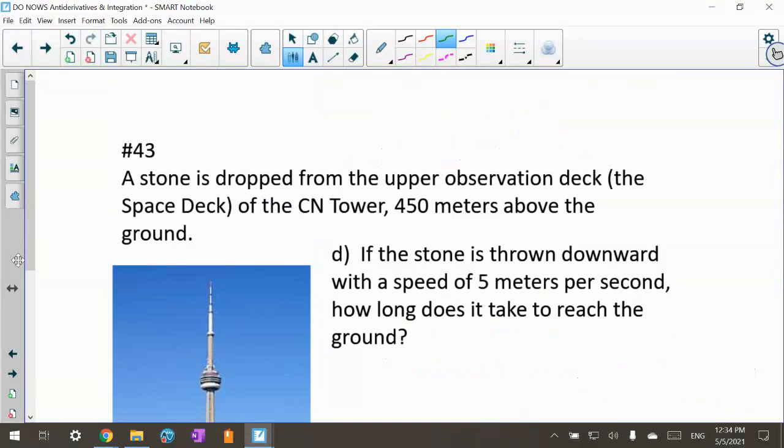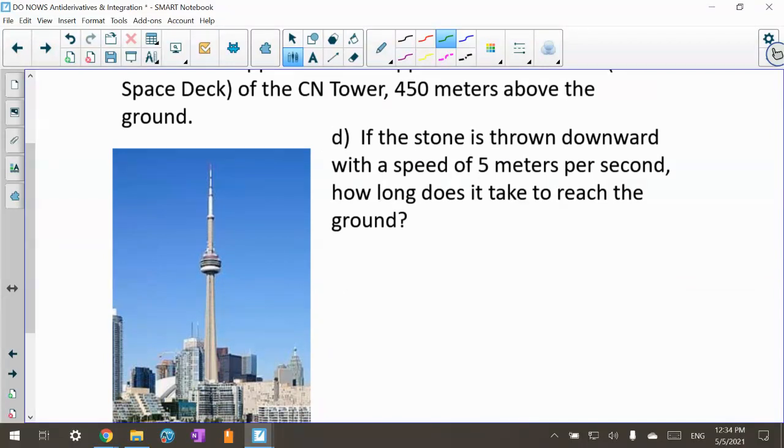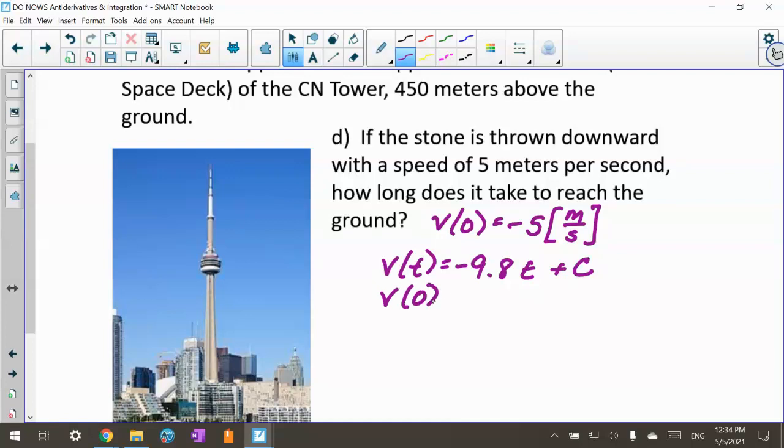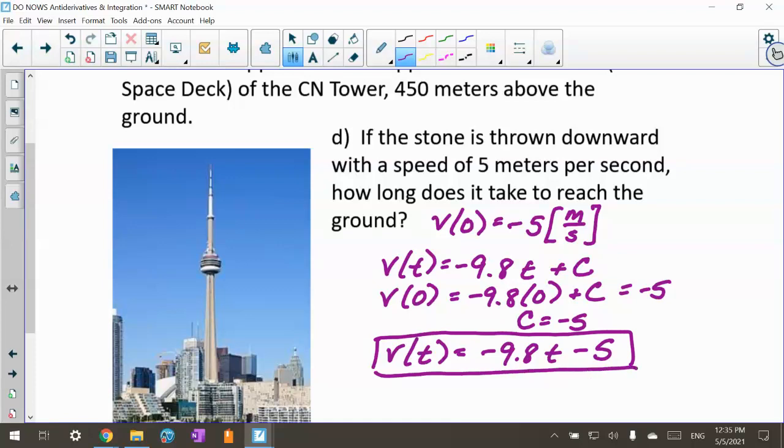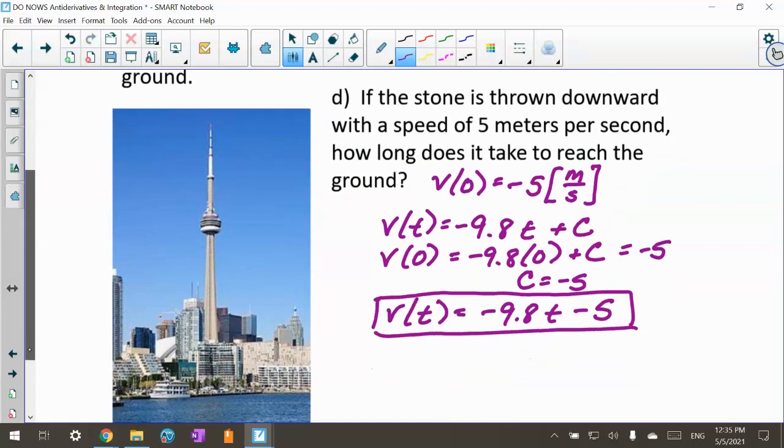Same picture, next question. If a stone is thrown downward with a speed of 5 meters per second, how long does it take to reach the ground? We now know that v(0) has a speed of negative 5 meters per second, and it's negative because I'm throwing it towards the ground. To find v(t), which is negative 9.8t plus c, I plug in 0: that equals negative 5, so c is negative 5. My new velocity equation is negative 9.8t minus 5 because you're throwing it with a speed down to the ground.